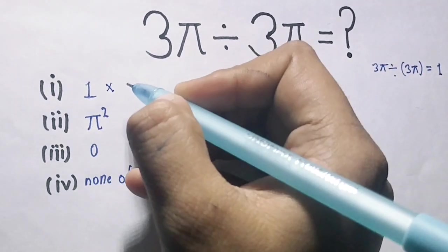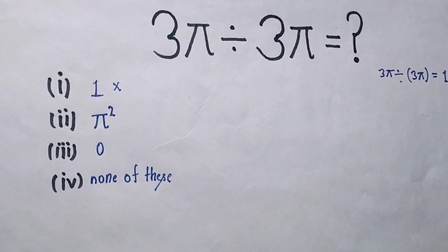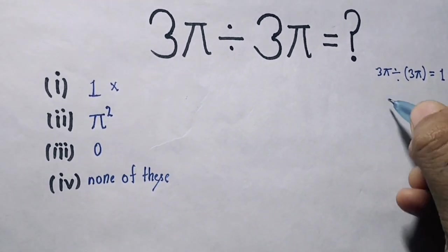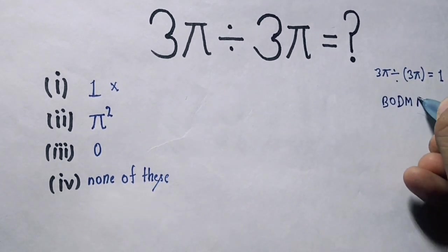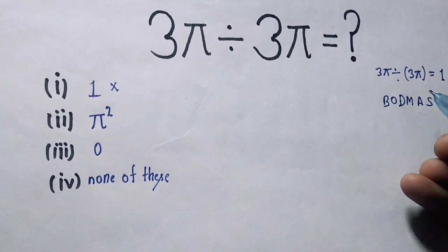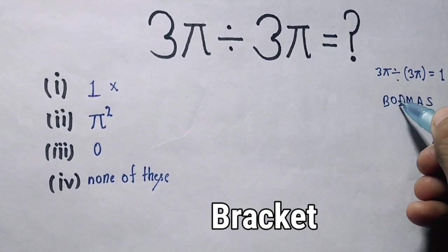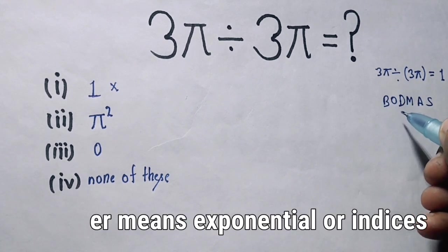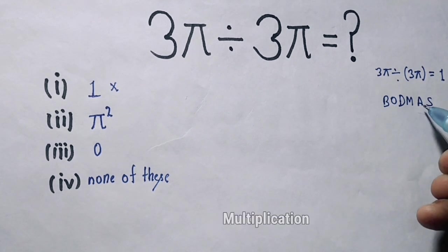This is not the answer. This is option 1, π², 0, none of these. This is not the answer to this question. So I am using the BODMAS rule. What is this BODMAS rule? Any equation we are firstly solve bracket, then order, order means exponential indices, then division, then solve multiplication, then addition, then subtraction.